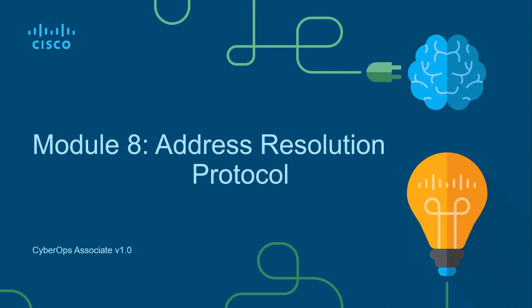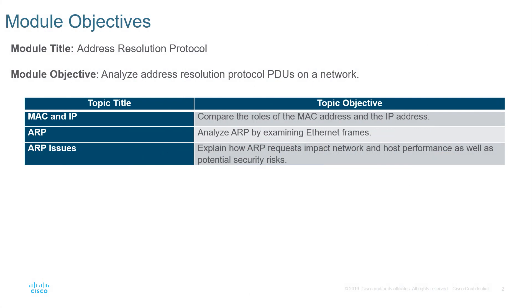Module 8 is all about Address Resolution Protocol, known as ARP. Here we're looking at MAC addresses and IP addresses, predominantly IPv4, since ARP only uses IPv4. We're going to analyze ARP by examining an Ethernet frame, and then look at some ARP request issues and the impact they may have on the network.